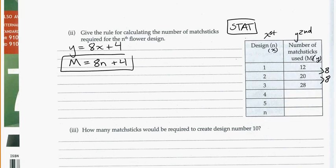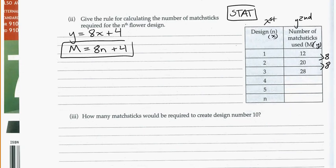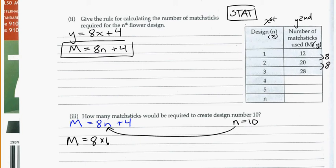And the next question they ask us is, how many matchsticks would be required to create design number 10? So think about what they've given you, design number 10, that's the n. So this is n is equal to 10. Now two ways we can do this. One, we can substitute it, like we've learned from algebra, directly into our equation. So we had the equation, M is equal to 8n plus 4, as our general rule. And we can take this in and plug it in to see what we get. So M is equal to 8 times 10 plus 4. 8 times 10 is 80, plus 4 is 84. So M is equal to 84.